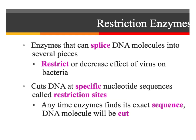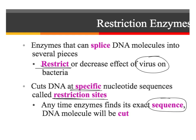Moving to the next slide — enzymes splice, which is another name for cut, DNA molecules into several pieces. We call them restriction enzymes because they restrict or decrease the effect of a virus on the bacteria. Bacteria have these restriction enzymes naturally to splice apart the DNA of viruses that are trying to infect them — it's like their immune system. We took them and used them to our advantage by knowing exactly where they're going to cut, allowing us to manipulate DNA. They cut DNA at specific nucleotide sequences, and these specific places are called restriction sites. Anytime the enzyme finds its exact sequence, the DNA molecule is going to be cut.